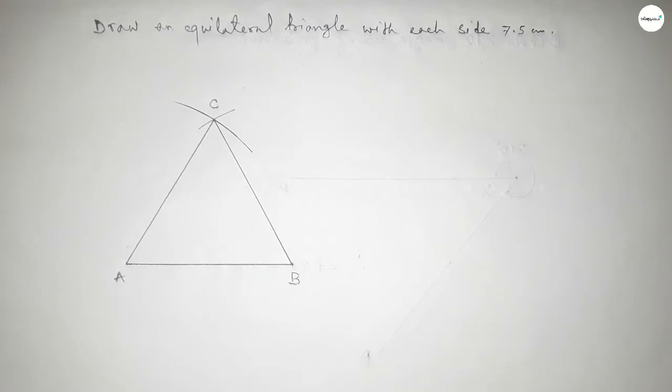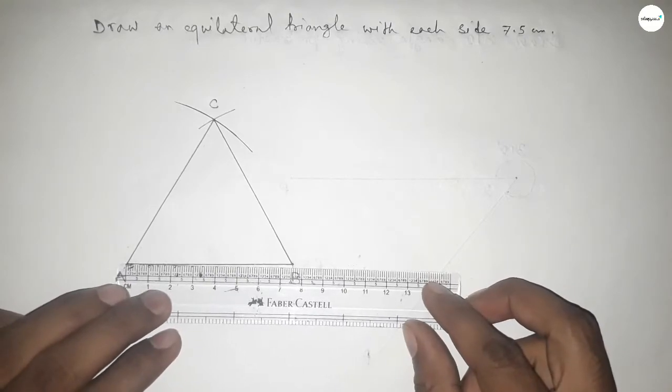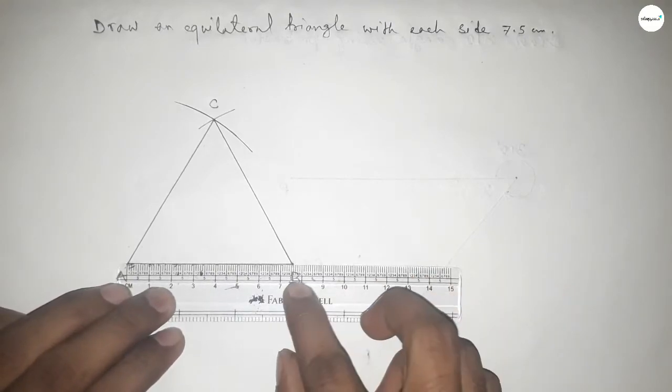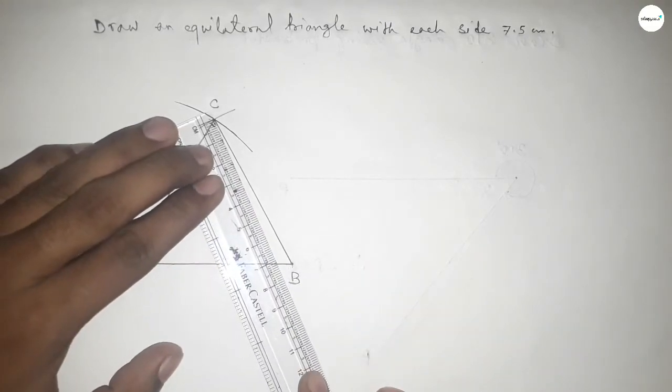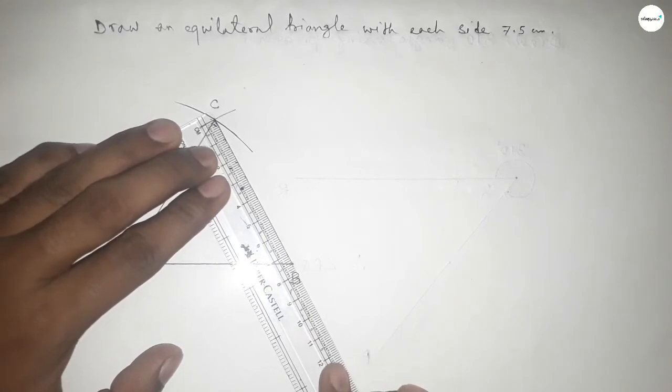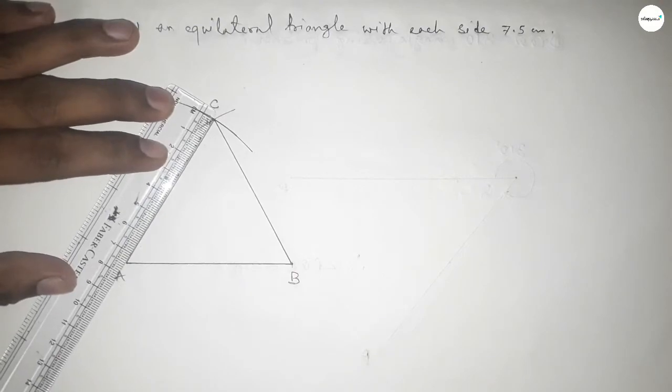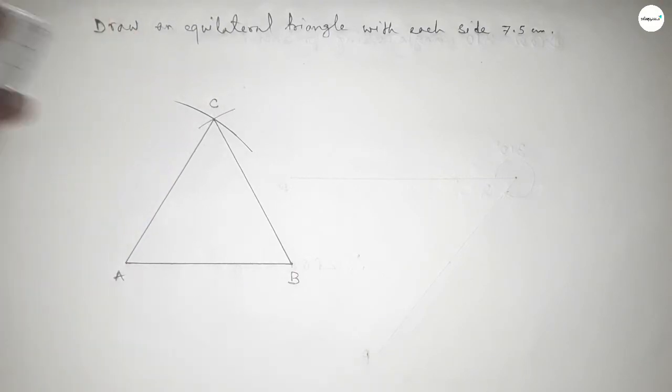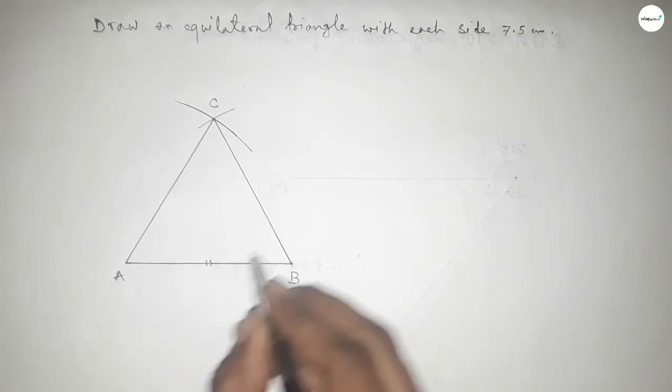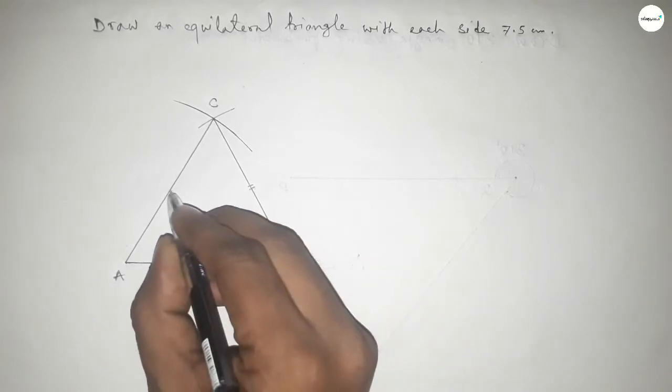Now checking all the sides are equal or not. So this is 7.5 centimeter and this is 7.5 centimeter and this is also 7.5 centimeter. So all the sides are equal.